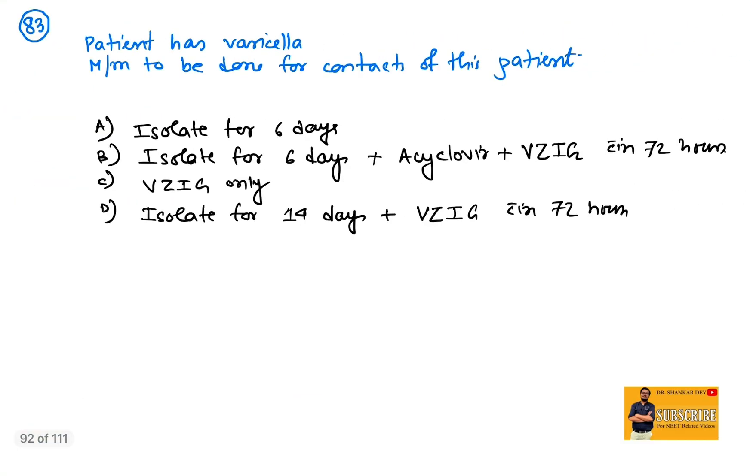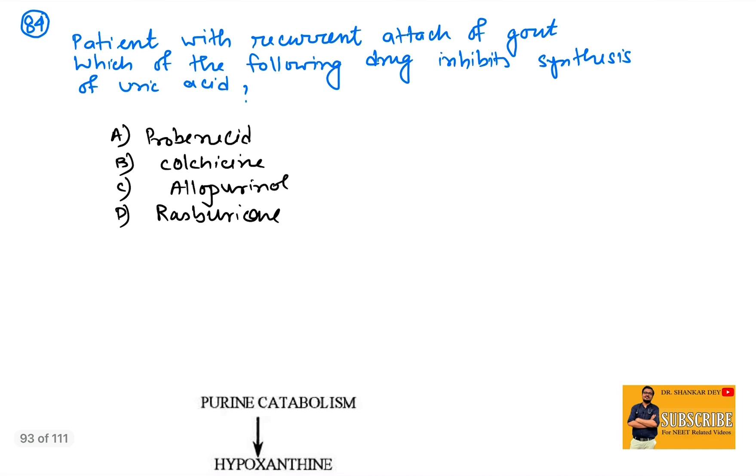Question number 83: patient has varicella, management to be done for contacts of this patient. So this management is asked about the contacts of the patient, not about the patient. The contacts of a patient with varicella should be isolated for 14 days, and varicella zoster immunoglobulin should be given within 72 hours as a prophylactic dose. So this should be the ideal answer: isolation for 14 days, varicella zoster immunoglobulin within 72—or maybe it's 72 or 48, but the ideal is within 72 hours you should give varicella zoster immunoglobulin.